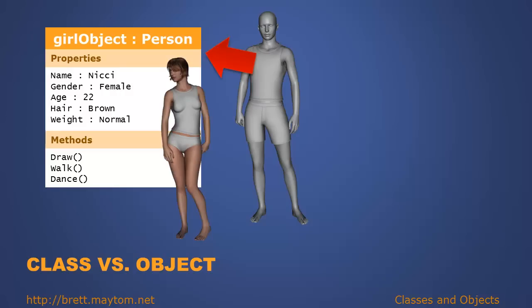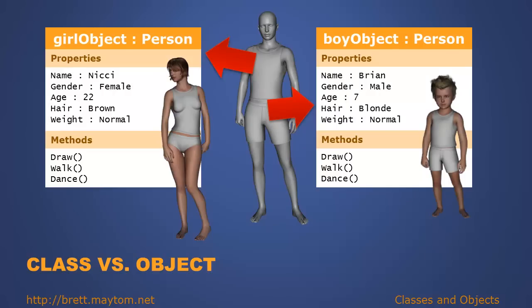A class, being a template, can be used to create multiple objects. For example, we can create a boy object, which is also a person, with a name, gender, age, hair, and weight. We can also execute the methods of draw, walk, and dance. So a class defines the conceptual idea of something, while an object is an actual implementation with data of that class.